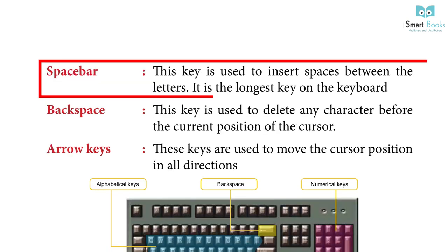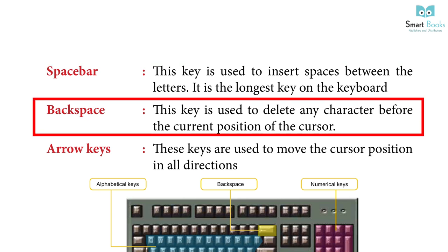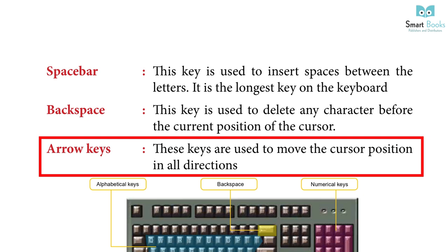Spacebar: This key is used to insert space between the letters. It is the longest key on the keyboard. Backspace: This key is used to delete any character before the current position of the cursor. Arrow keys: These keys are used to move the cursor in all directions.